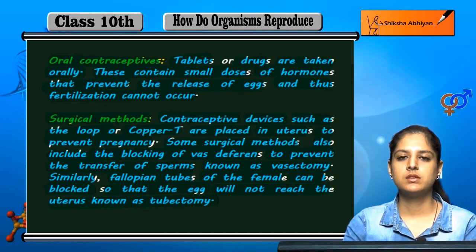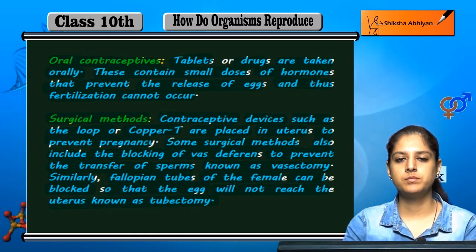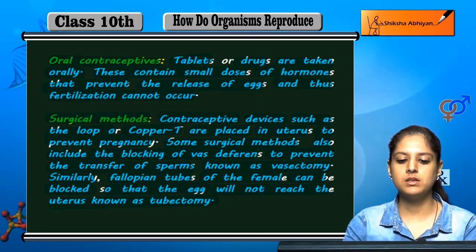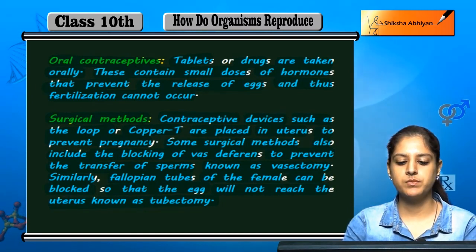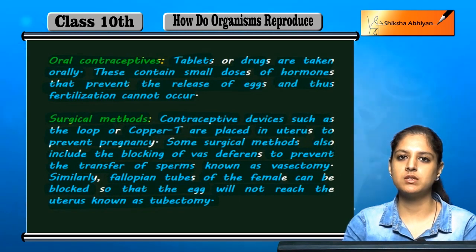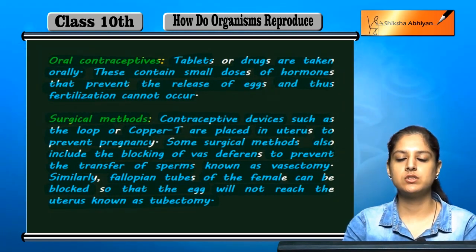So there are four methods to prevent fertilization: the natural method, the barrier method, oral contraceptives, and surgical methods.